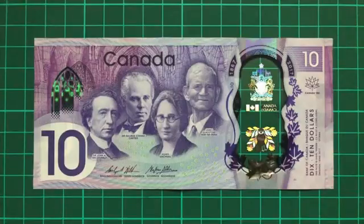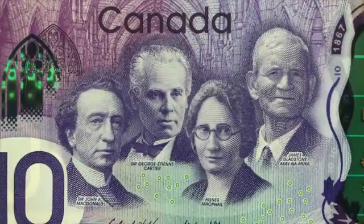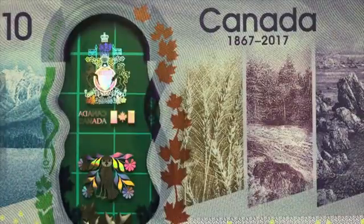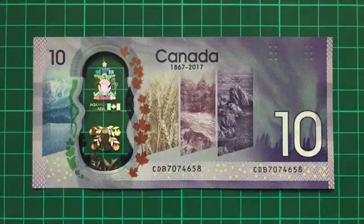Now this banknote is literally teeming with symbolism and important features, including significant historical figures, architectural elements from the country's parliament, depictions of the country's different landscapes and environments, and various crests and symbols, such as Canada's coat of arms and the owl bouquet, designed by an acclaimed Inuit artist. And it even features the Northern Lights.